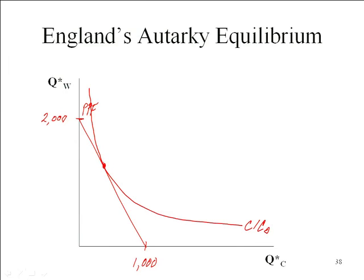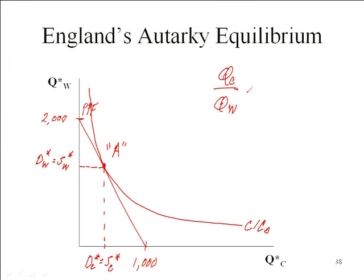Notice what happens here. When we're producing and consuming at point A, it's still true that the demand for wine equals the supply of wine, and that the demand for cloth equals the supply of cloth. The marginal rate of transformation equals the marginal rate of substitution. Notice that the ratio of cloth to wine produced and consumed is relatively low. In Portugal, we're producing and consuming a relatively large amount of cloth. In England, we're producing and consuming a relatively large amount of wine.